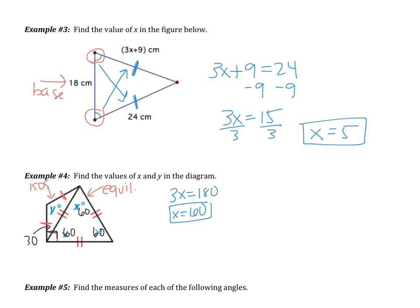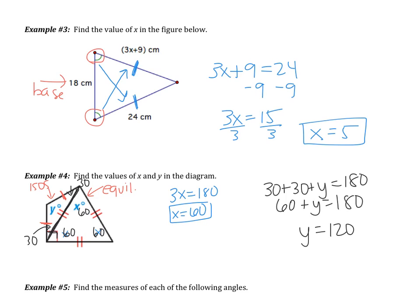If this angle is 90 and the big part is 60, that means this little part is 30. On my isosceles triangle, this is the base. So if I have one base angle of 30, this one is also 30. The triangle sums to 180, so 30 plus 30 plus Y equals 180. This gives 60 plus Y equals 180, and Y equals 120.